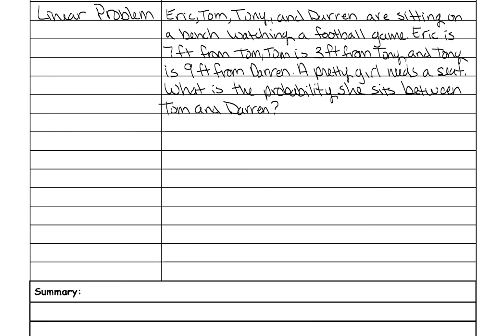So the first thing that you need to do is to basically draw out the situation as if it was a line. So this is how it says they are sitting: Eric and Tom, Tony, and then Darren. And then we need to fill in how far apart from each other they are. This is the number line they give you. It says that Eric is seven feet from Tom and Tom is three feet from Tony, and Tony is nine feet from Darren.